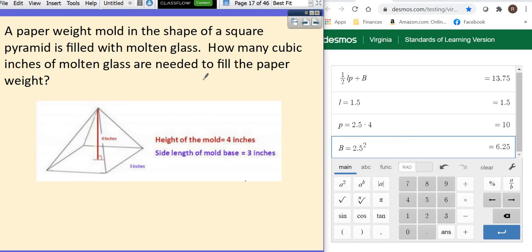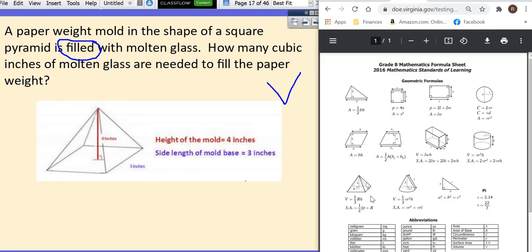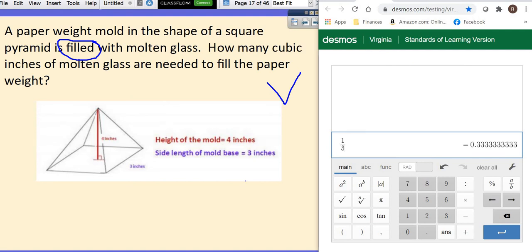We've got a paperweight, and it has a square-based pyramid, and it's filled with molten glass. So you're filling it. This one is going to be volume. How many cubic inches of molten glass are needed to fill the paperweight? So again, that's a square-based pyramid. We're going to go to our formula sheet. The volume for a square-based pyramid is one-third big B times H. So let's put that in. One-third, big B, and H.